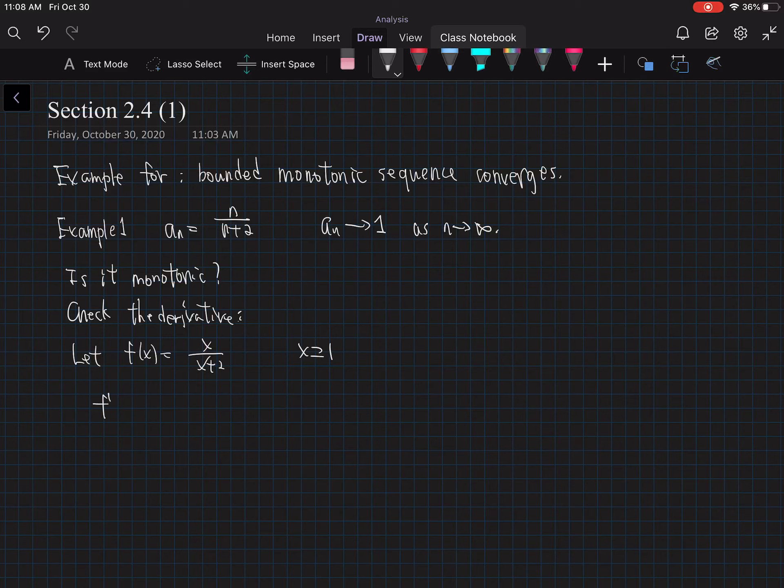So the derivative of this function is, well, square to the bottom, x plus 2. The derivative of x is 1 minus x times the derivative of x plus 2 is 1. So you get 2 over (x plus 2) squared. Greater than 0 for any x, particularly for x greater than or equal to 1.